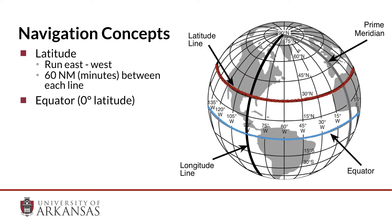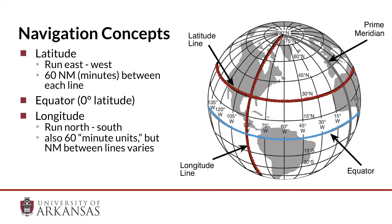The equator is halfway between the north and south poles and is designated as zero degrees latitude, with each pole being 90 degrees north or south. Longitudinal lines run north and south from the north and south poles and are sometimes called meridians. While spaces between lines of longitude are also in 60 units, the distance of each unit varies as the lines converge at the north and south poles.